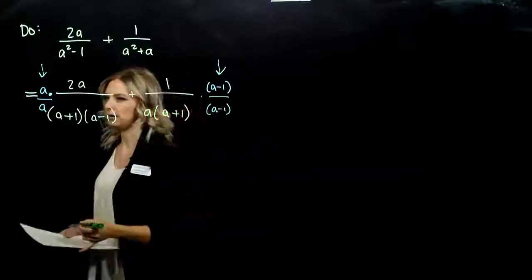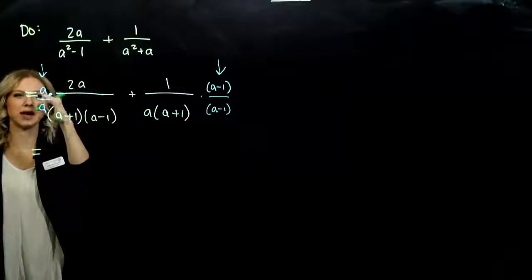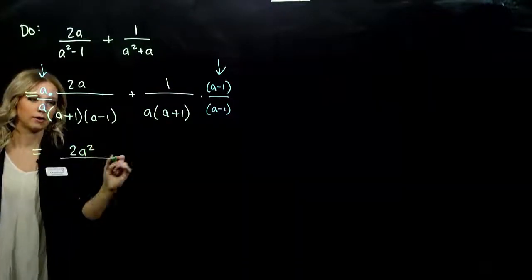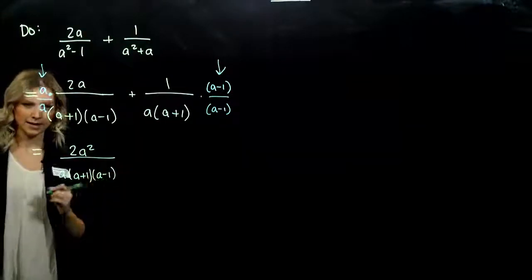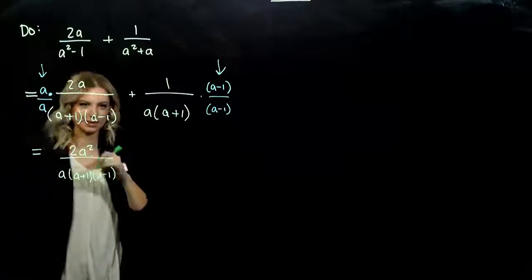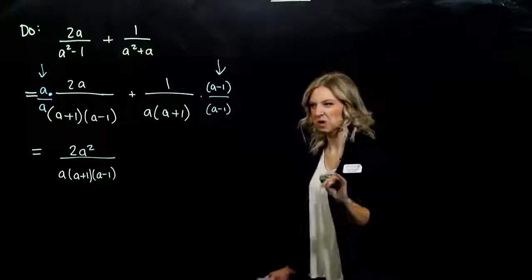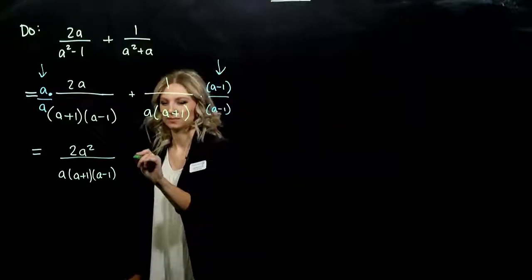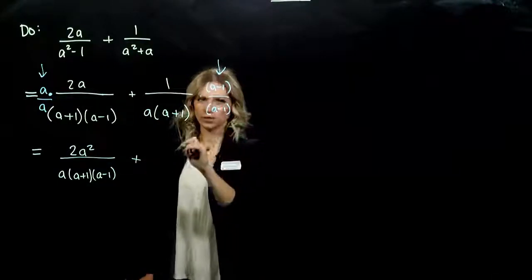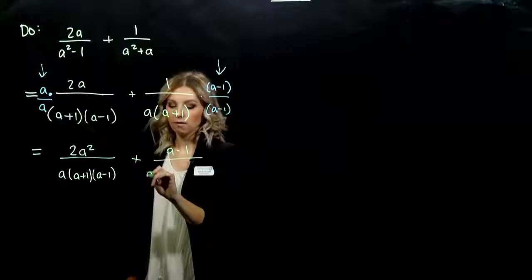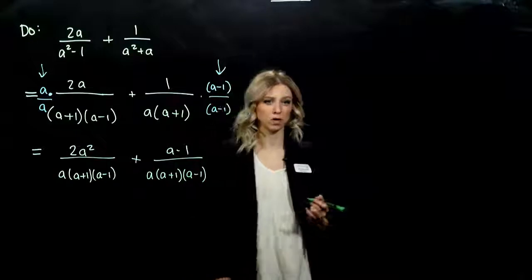Let's start simplifying in the numerator. I've got 2a times a, so I'm looking at 2a squared over my LCD. If I leave it in factored form in the end, I can look and see if I can simplify any further. If we multiply it all out, we're going to have to refactor in the end — don't make more work for yourself. And the numerator of my last term: one times anything is itself, so we get a minus one, all over the same denominator.